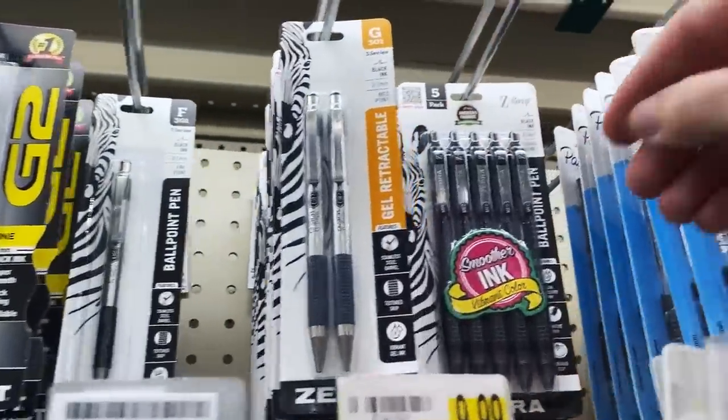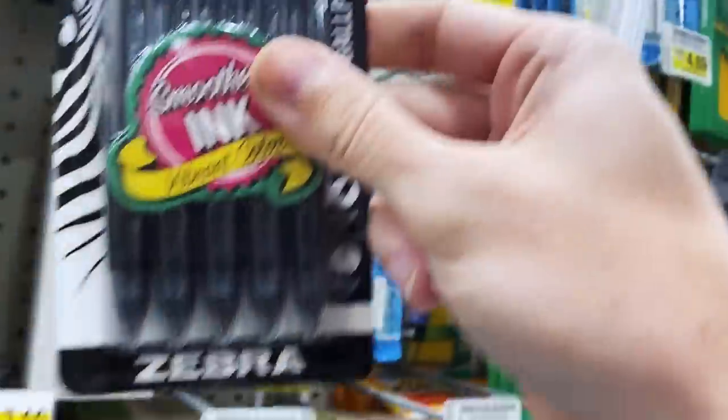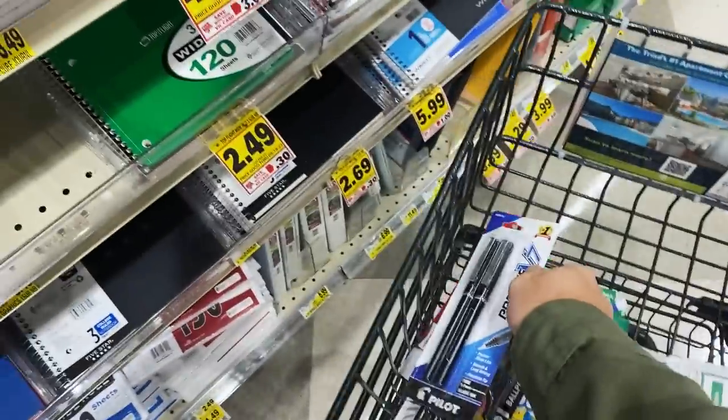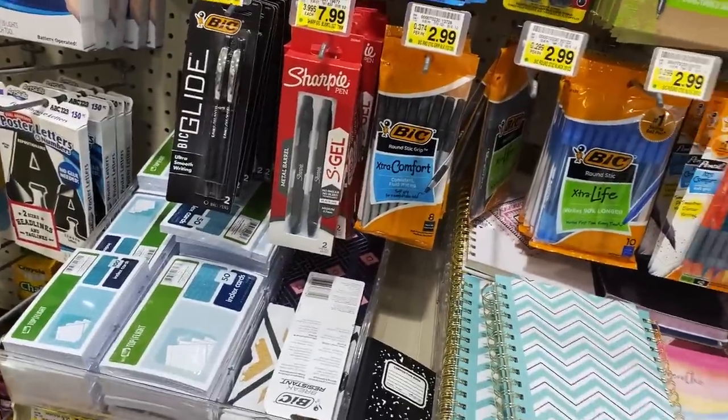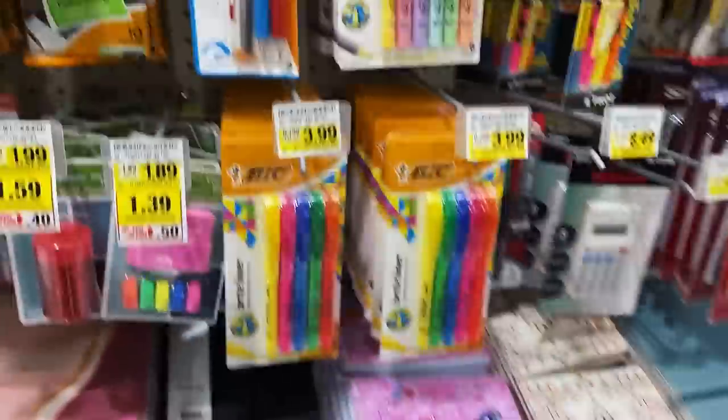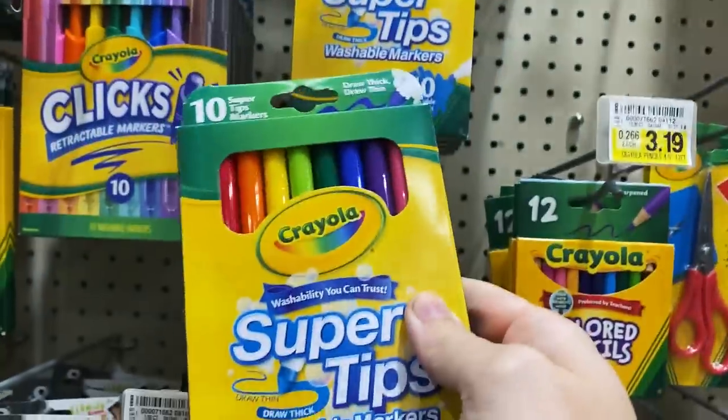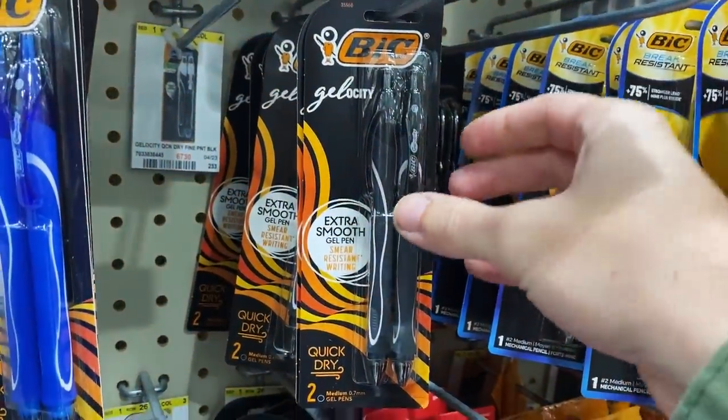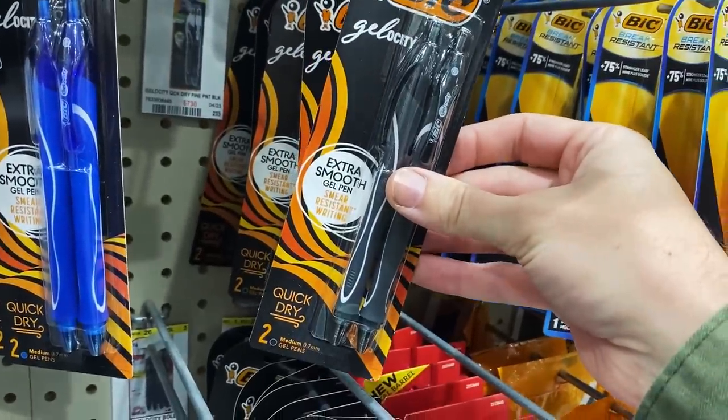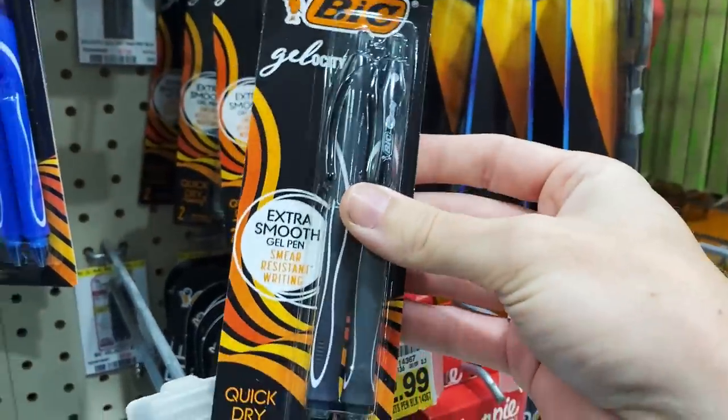Zebra is amazing - smoother ink, vibrant color. I have to try that. I'm just grabbing things I already know. I know I love these Pilot Precise V7 pens. I should look for something I haven't tried before. I haven't tried the Sharpie gel pens. Maybe some of these Super Tips. What about this little guy right here - the Bic Gelosity? Extra smooth, smear resistant, quick dry. Never seen it, never heard of it.